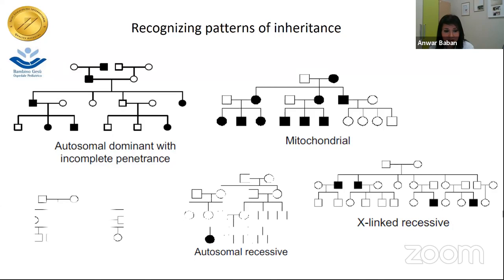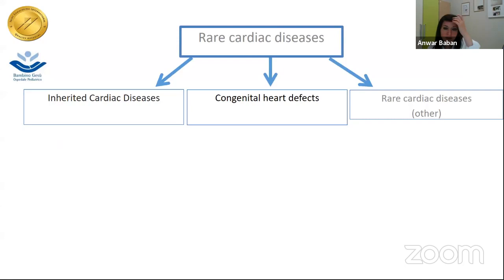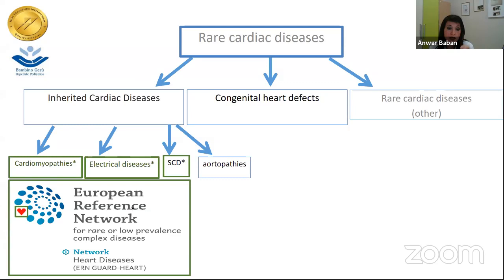When we talk about rare cardiac diseases, they can be subclassified into major groups: inherited cardiac diseases, congenital heart defects, and other rare forms. The inherited cardiac diseases are cardiomyopathies and electrical diseases, mainly included in the European Reference Network. Hopefully in coming calls, congenital heart defects will be taken into consideration both for children and for adults.